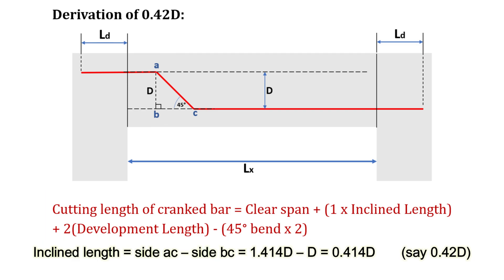Therefore, the inclined length is equal to the length of side AC minus the length of side BC which is equal to 1.414D minus D or 0.414D.